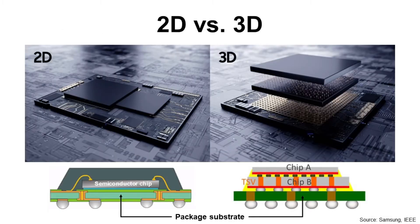Let's compare 2D and 3D to understand what 2.5D is. A 2D package is a conventional package structure with a die using wire bonding or flip chip. It can also have more than two dies, side-by-side or stacked. But they are not directly connected to each other.